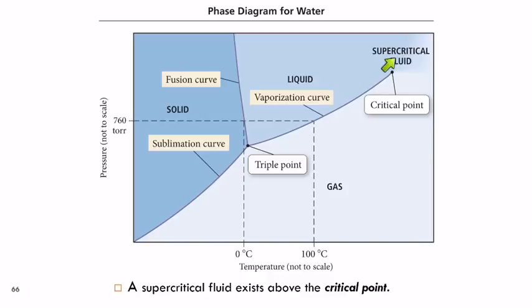If we get above this point, this vaporization curve ends—that's called the critical point. Beyond that, at temperatures and pressures higher than that, we don't have two states. We have a supercritical fluid.